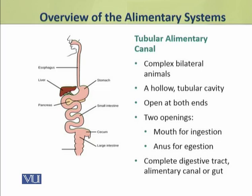The tubular alimentary canal is a hollow tube open at both ends — unlike the sac which is closed on one side, the tube has two openings. The first opening is called the mouth, which is for ingestion or intake of food.